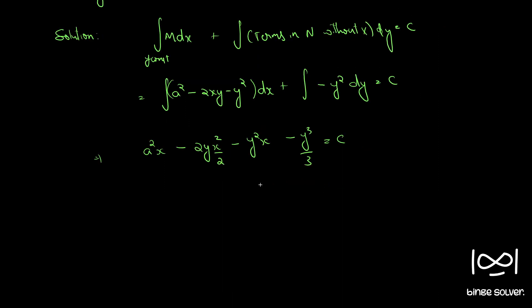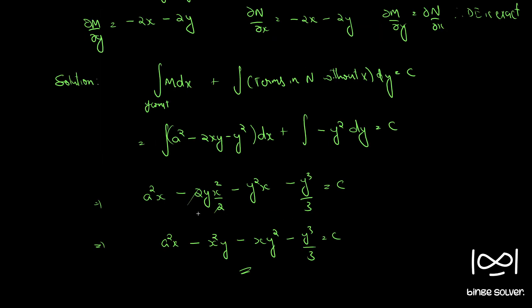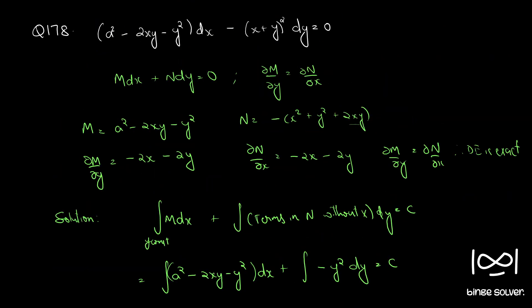Multiplying through, the final answer is x³/3 - x²y - xy² - y³/3 = c. This is the solution to question number 178.